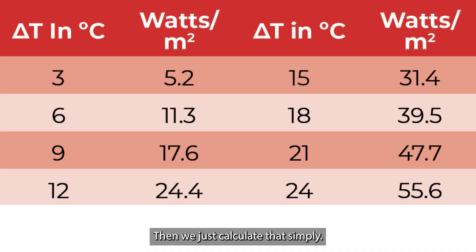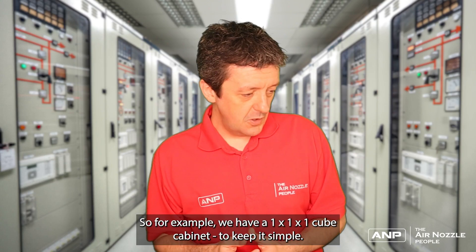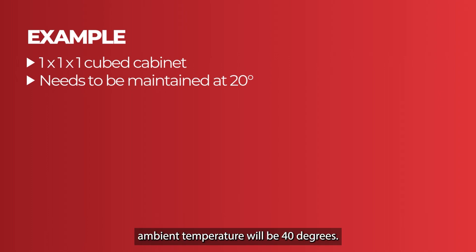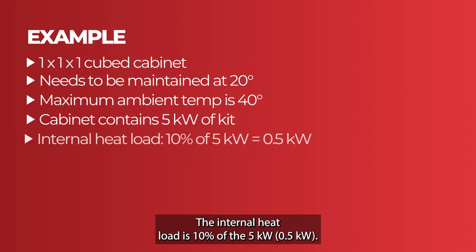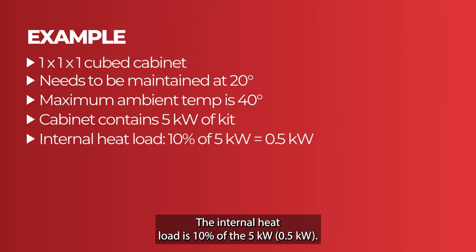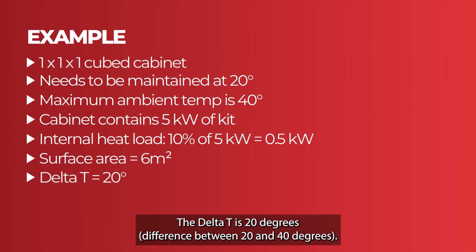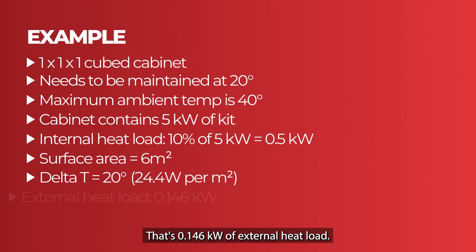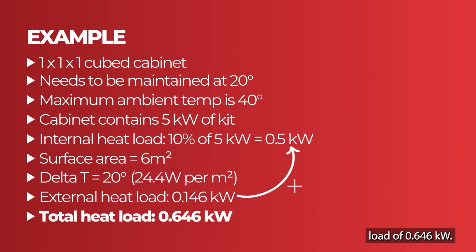We add the external and internal heat loads to get the overall heat load in watts. For example: a one by one by one metre cube cabinet, kept at 20 degrees with a maximum ambient of 40 degrees, containing five kilowatts of kit. The internal heat load is 10% of five kilowatts — 0.5 kilowatts. Surface area is six meters squared. Delta T is 20 degrees. From the charts, that gives 24.4 watts per meter squared, so 0.146 kilowatts of external heat load. Adding that to 0.5 kilowatts gives a total heat load of 0.646 kilowatts.